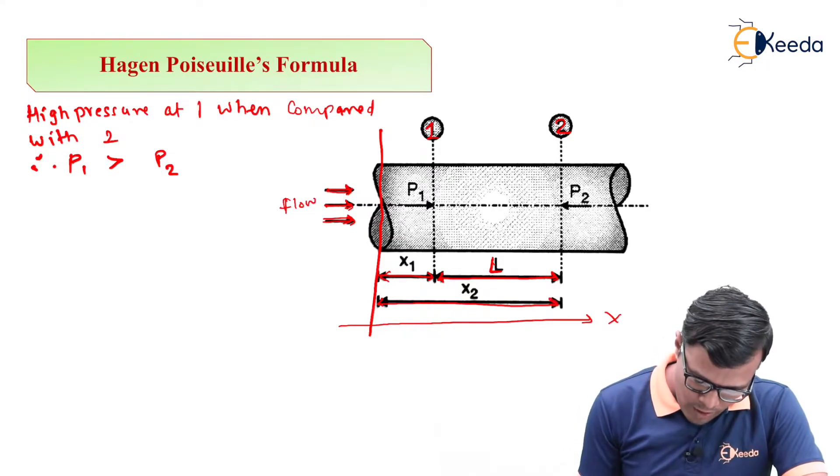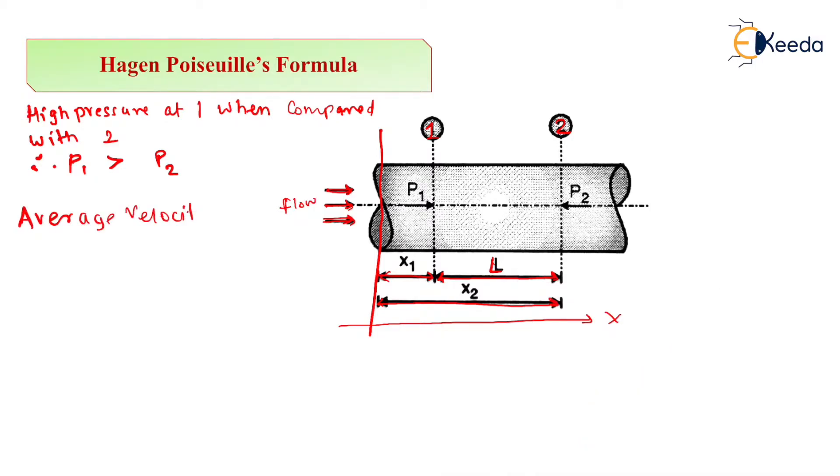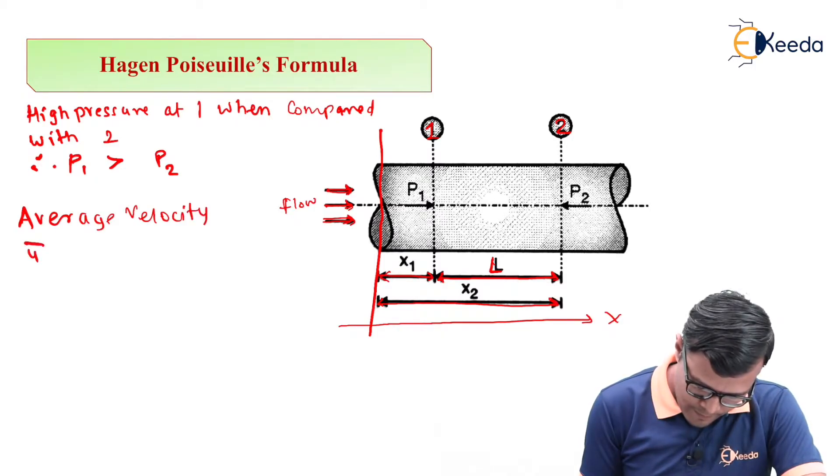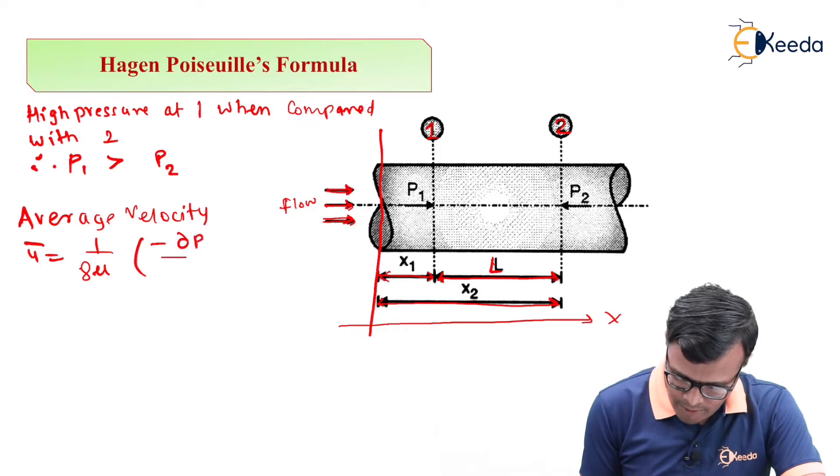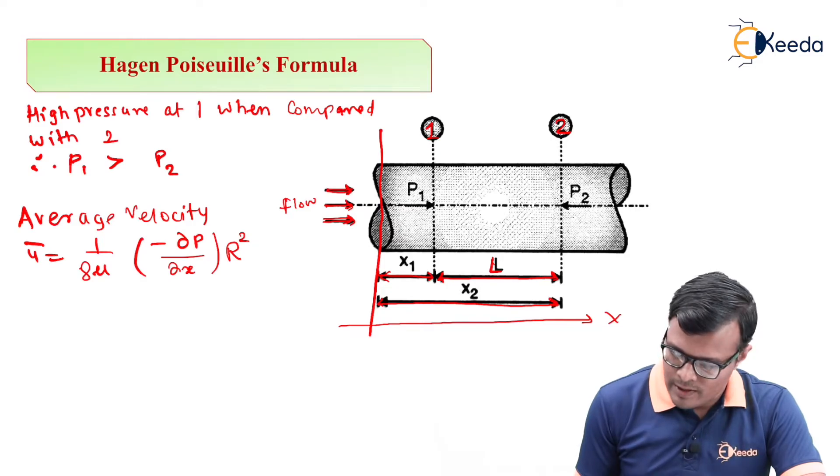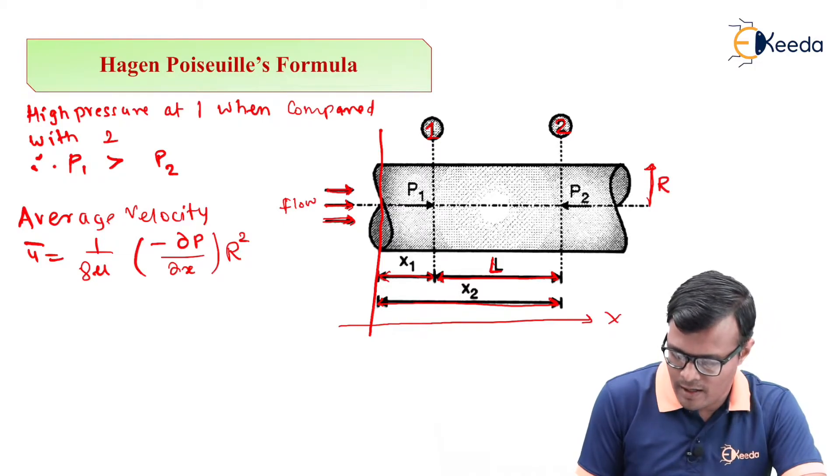If I am to talk about average velocity, that is u bar, that is equal to 1 upon 8 mu minus dP/dx into R square. This R is nothing but the radius of the pipe, that is this capital R.